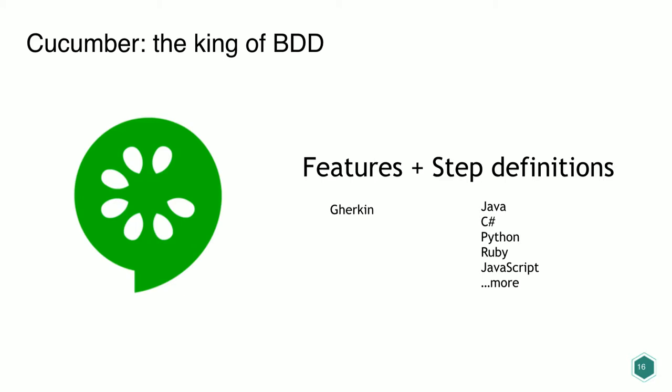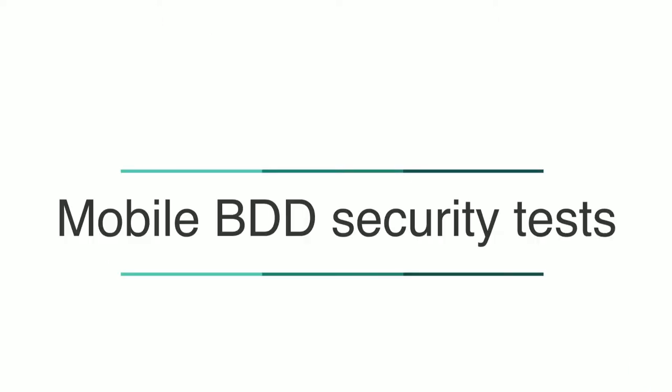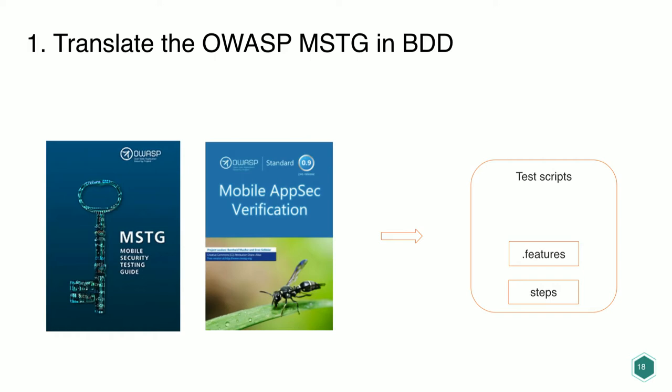The framework we'll use is Cucumber — the king of BDD — because it lets you write feature files and steps in different languages, making it adoptable by different companies. What we're going to write are mobile BDD security tests. First, we need to translate the OWASP Mobile Security Testing Guide into BDD. We want to create features and steps integrated in the CI/CD, executed on every build of your mobile app.